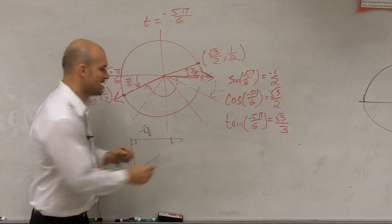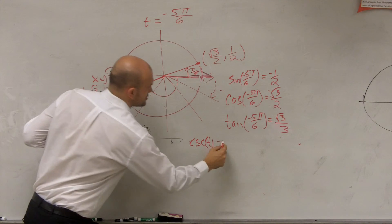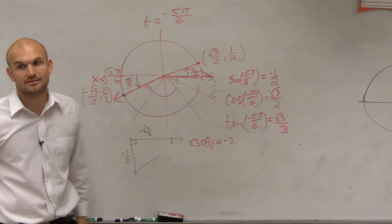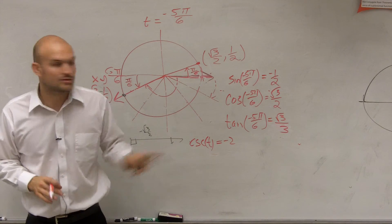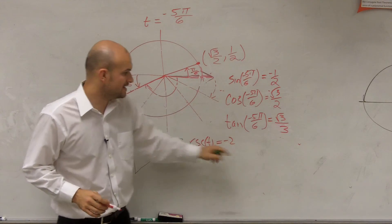What is sine? I'm sorry. Remember, cosecant is the reciprocal, right? So that equals negative 2. Guys, I need you to write this down. The sine, cosecant is the reciprocal. The reciprocal of negative 1 half is negative 2.